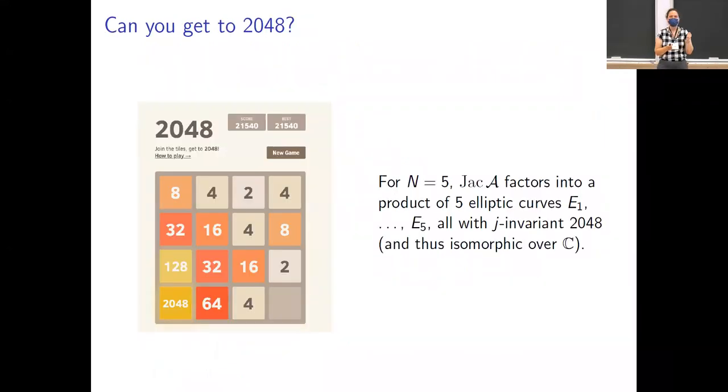All right, so things are really special here, right? We built this beautiful intersection of quadrics. We use the golden ratio in the parameters in our quadrics. It turns out that the Jacobian that we get is also a really special Jacobian. It's a product of five isogenous elliptic curves, and they all have j-invariant 2048. So we can get to 2048.